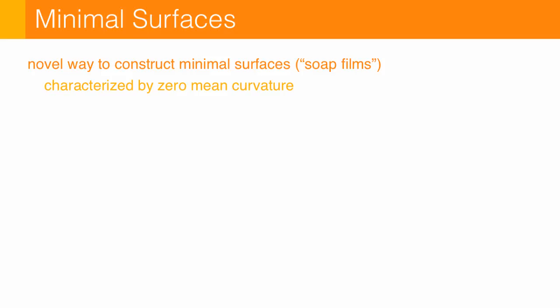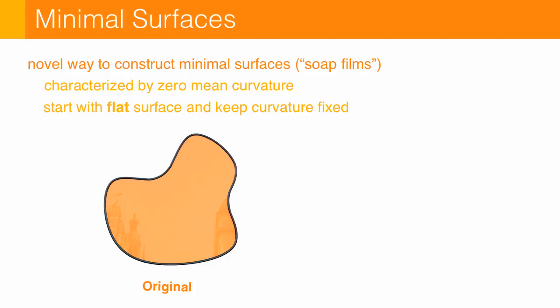Actually, the same setup gives us a really nice way to compute minimal surfaces, which are these zero mean curvature things that sort of look like soap bubbles. And so again, the idea is we start out with something with the curvature we want, in this case, something completely flat. And then we keep this curvature the same as we modify the boundary. And so immediately we get a minimal surface with the added bonus that the triangle quality is preserved.